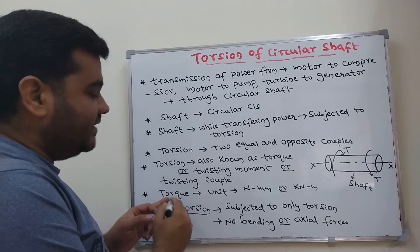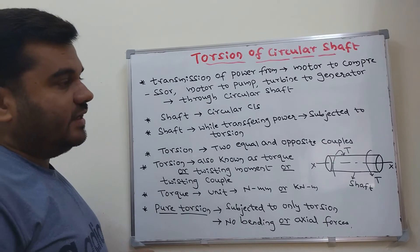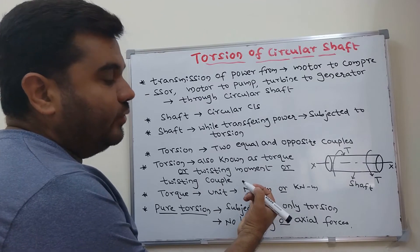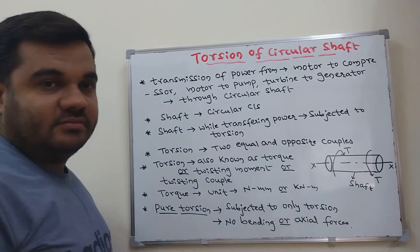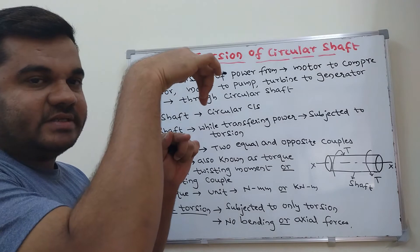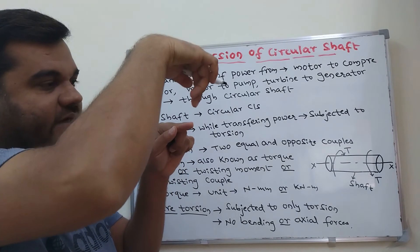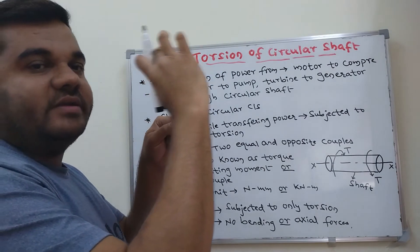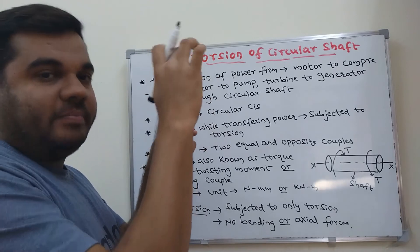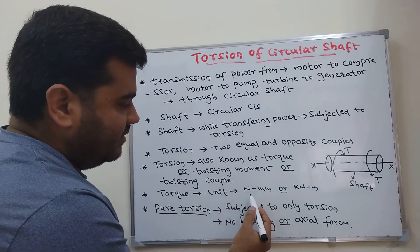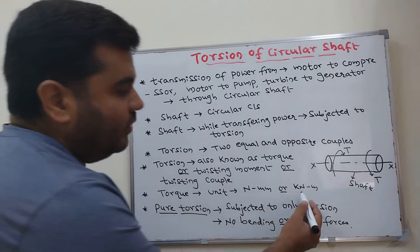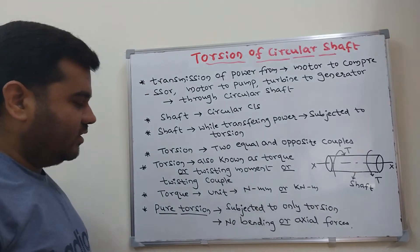The unit of torque is Newton meter — either Newton meter, Newton millimeter, or kilonewton meter. Torque equals force multiplied by perpendicular distance. Force is in Newtons and perpendicular distance is in mm, meters, or km. So the units are Newton mm, Newton meter, kilonewton meter, or kilonewton mm.